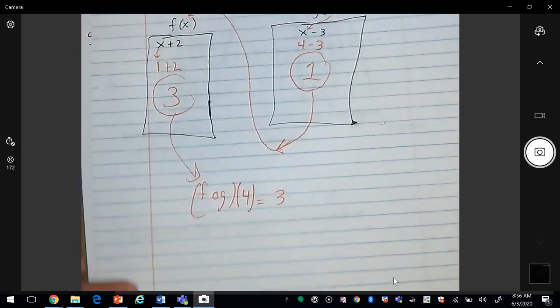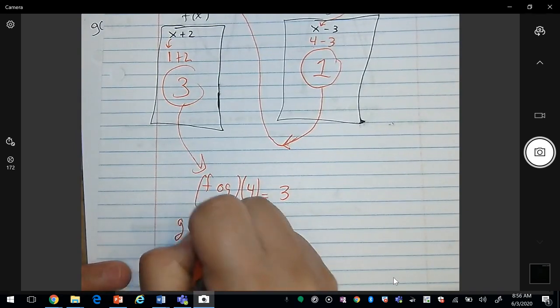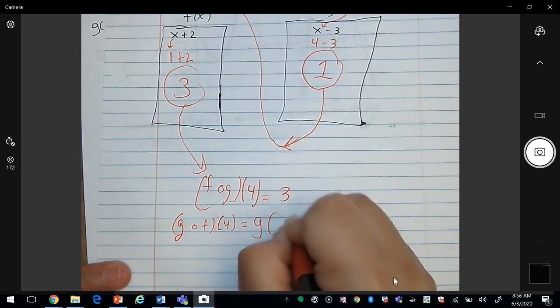Okay, so notice if I reverse this, what if I have g first? Okay, so g of f of 4.